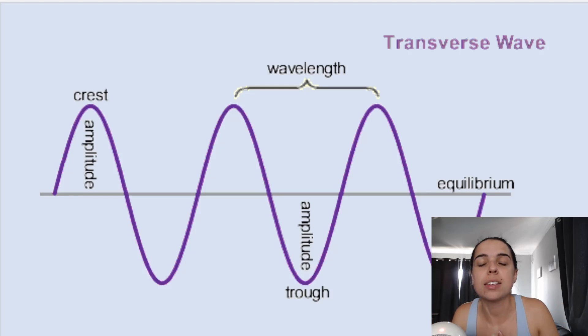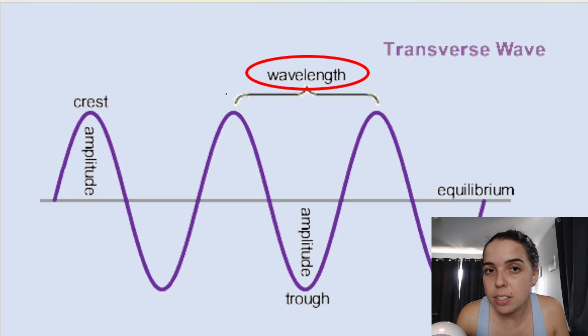In the previous video we discussed what a transverse wave is, we defined a transverse wave and we spoke briefly about the properties and different aspects of a transverse wave and we covered amplitude. If you missed that video, the playlist will be linked in the description box. But in today's video we're going to be going over points in phase and points out of phase and wavelength.